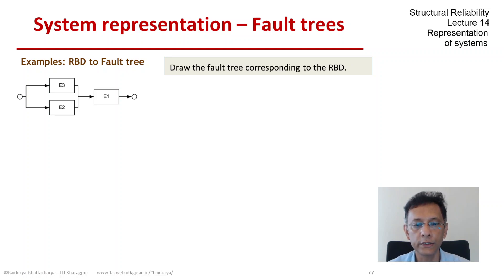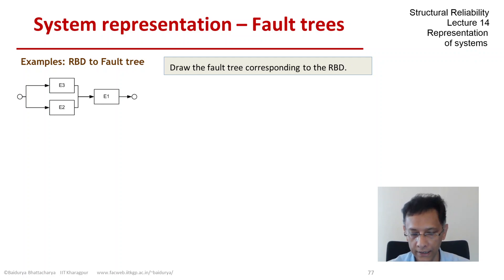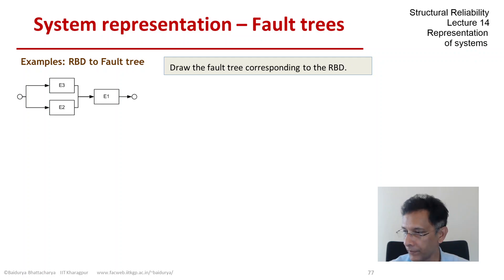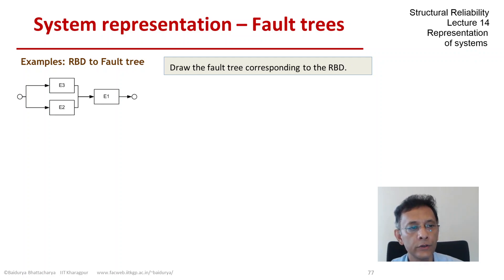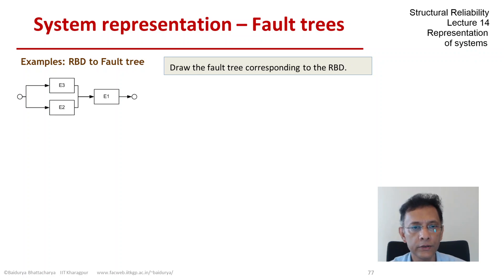Let's look at two more examples of converting block diagrams into fault trees. Here we have a very simple three-element system: E1, element 1, in series with a parallel configuration of E2 and E3. We have looked at this earlier and now let us create the fault tree.